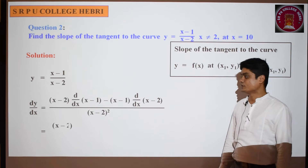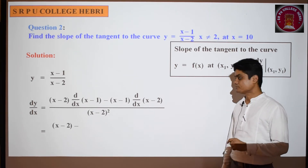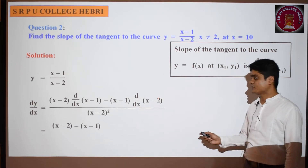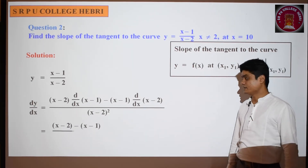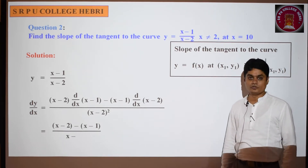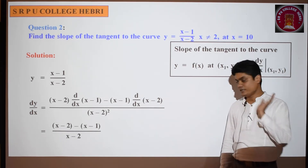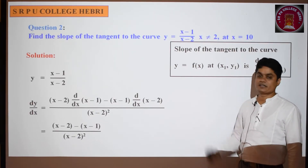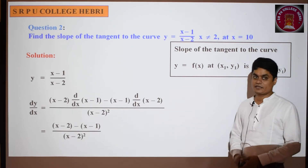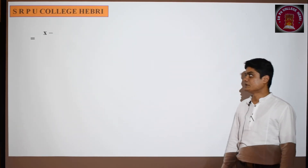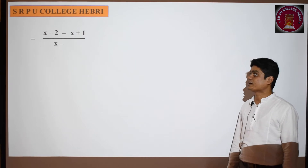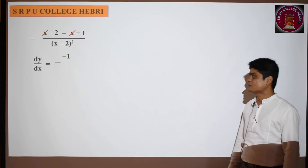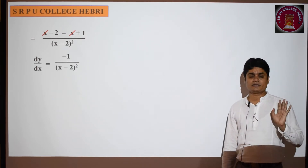Simplifying: differentiation of (x - 1) is 1, so (x - 2) × 1 minus (x - 1) × 1, divided by (x - 2)². Expanding: x - 2 - x + 1 = -1. So dy/dx = -1/(x - 2)². No need to simplify further.